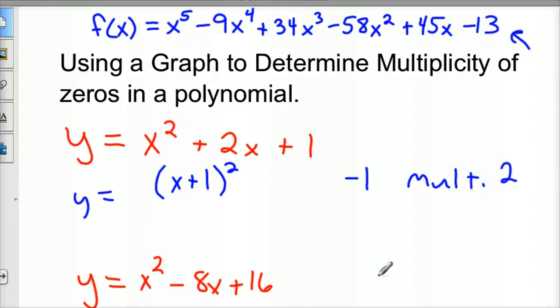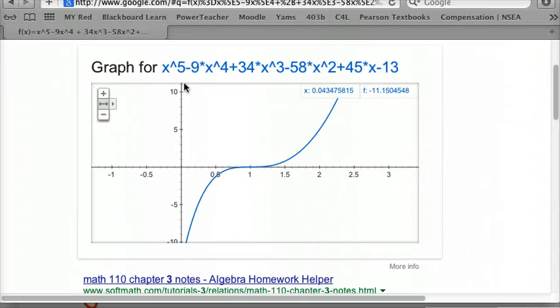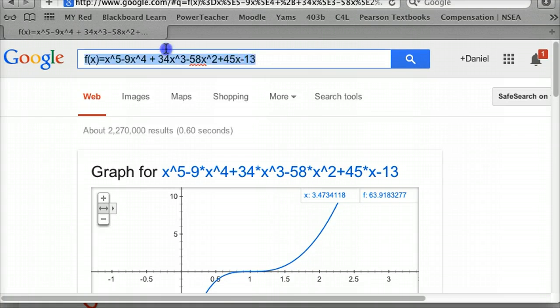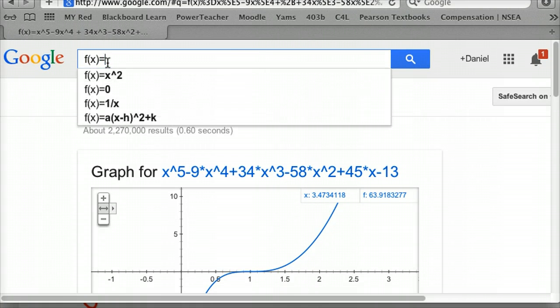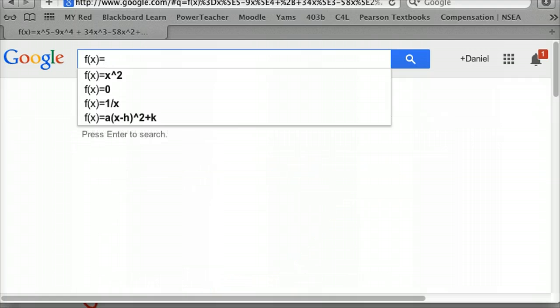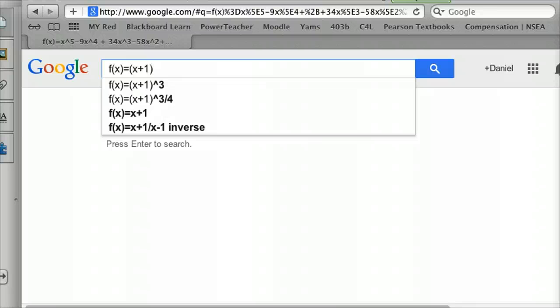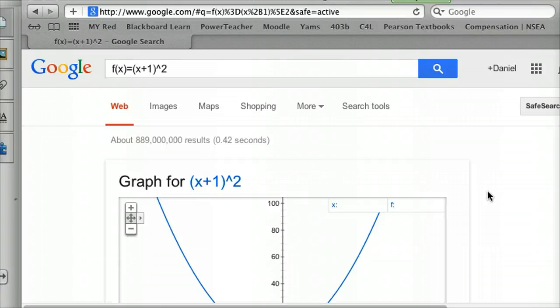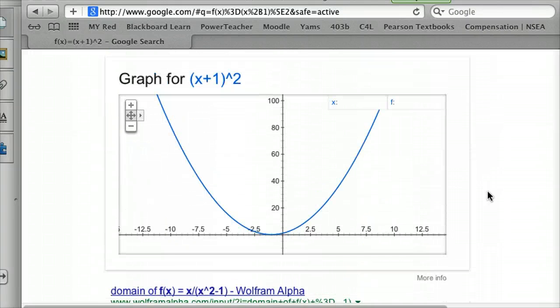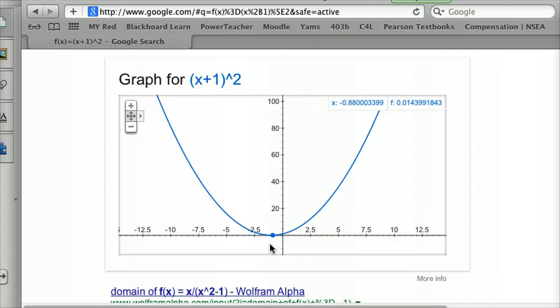So let's go back to Google here. And we'll bring up that same graph, but I'll just change it. I'm going to type it in its factored form. So (x+1) squared, and then carat squared, hit enter. And there's what the graph looks like, right there. Notice it just comes down here and touches the graph in one spot.